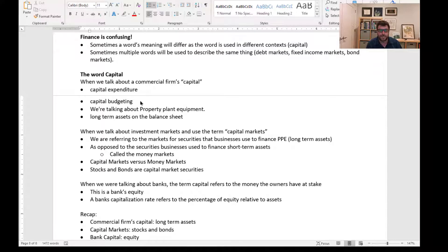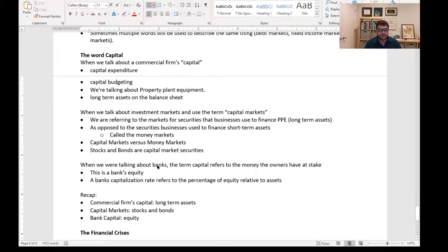For banks, capital refers to the money owners have at stake—equity. So commercial firm capital is an asset, but bank capital is equity. The capitalization rate is the percentage of equity relative to assets. Recap: commercial firm capital equals long-term assets; capital markets means stocks and bonds versus money markets; bank capital means equity. It's important to know the context and how the word relates within the specific context.